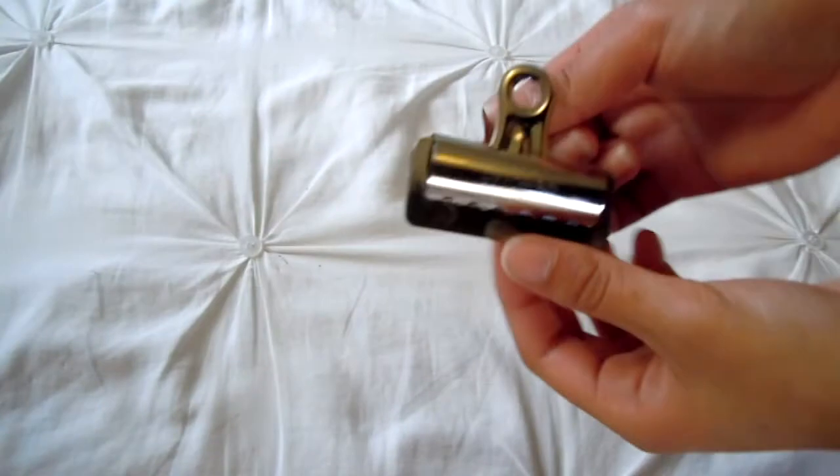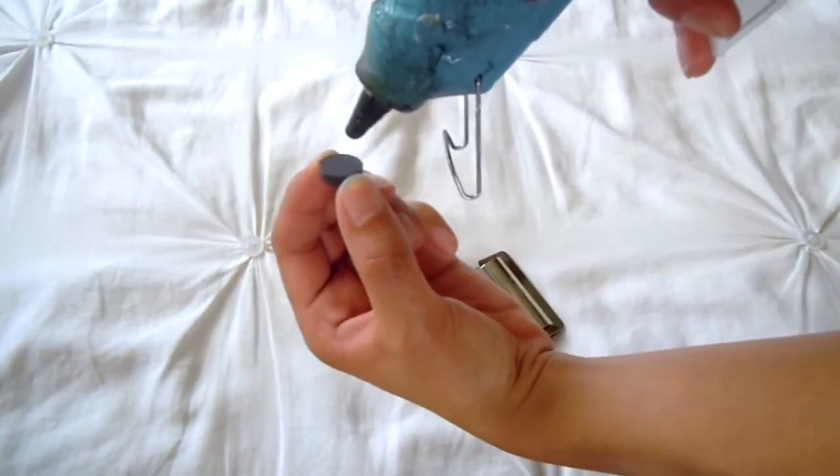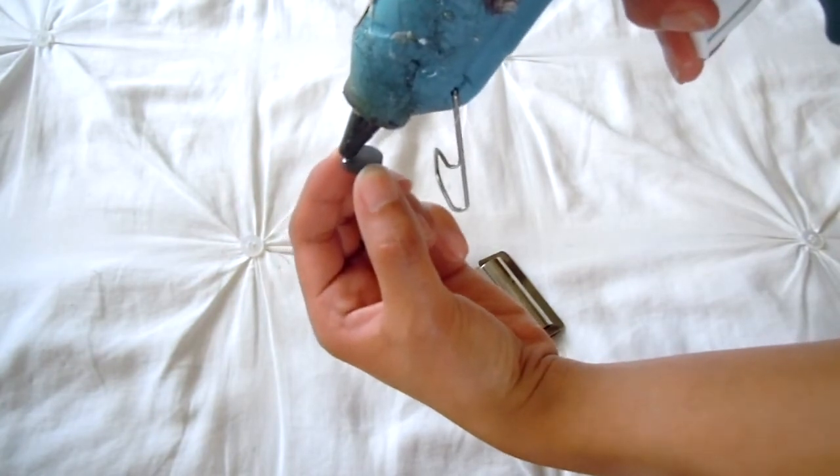Alright guys, final step. Now what we need is some magnetic things to put on our magnet board. So just take some magnets and stick them on anything you want using hot glue.